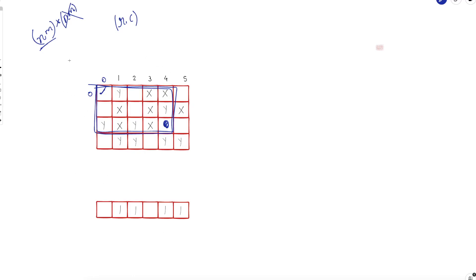Let's first solve the same problem on a 1D array. Suppose you have an array with some ones and need to count ones in a subarray. The answer is simple prefix sum: compute a prefix sum array — for example 0, 1, 2, 2, 3, 4. To find the sum over a range, just subtract two prefix sum values, giving the answer in O(1). For instance, 3 minus 0 equals 3.